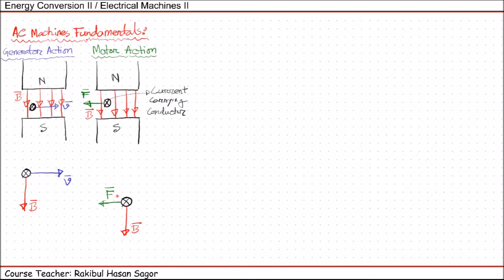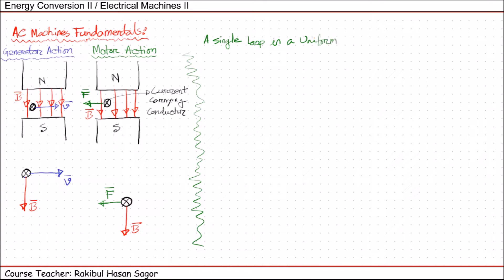This is what we completed in the previous lecture. In today's lecture, we will apply a conducting loop in order to analyze the situation — a single loop in a uniform magnetic field.